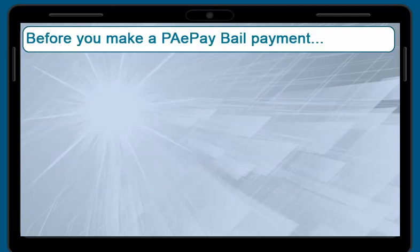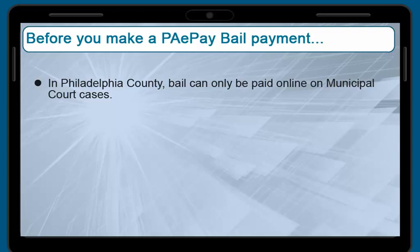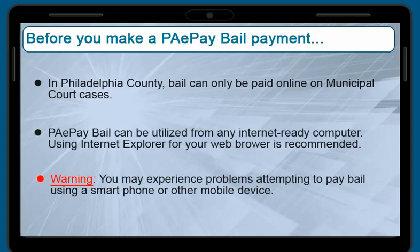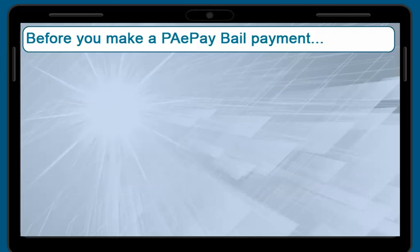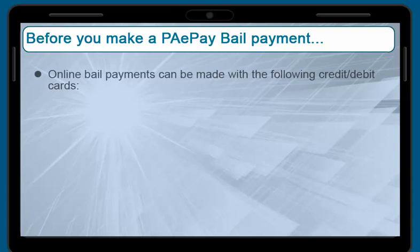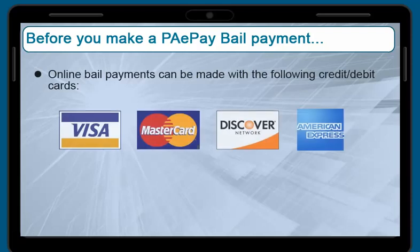Before we get started, here are some important things you need to know to make a PA ePay bail payment. In Philadelphia County, only municipal court cases are eligible for bail ePayments. A bail ePayment can be made at any computer with internet access. Making a bail ePayment will typically not work using a smartphone. PA ePayBail accepts payments using Visa, MasterCard, Discover, American Express, or a debit card.